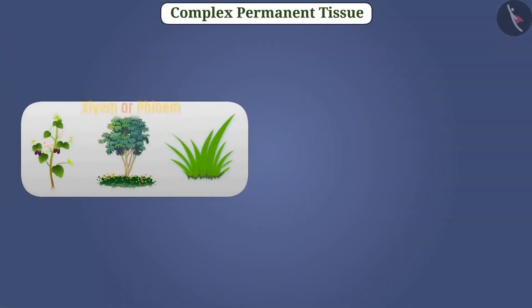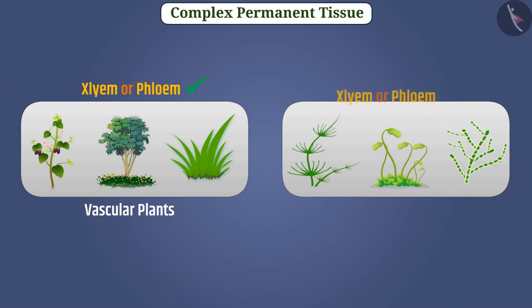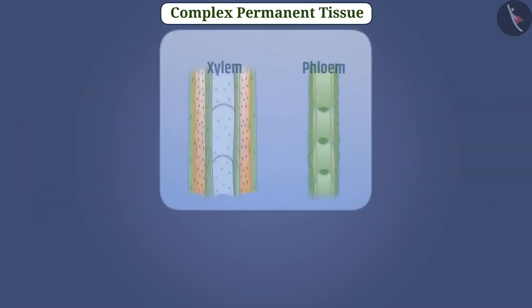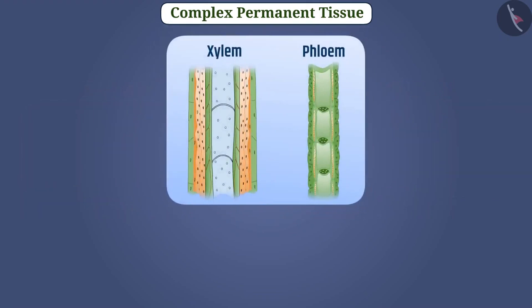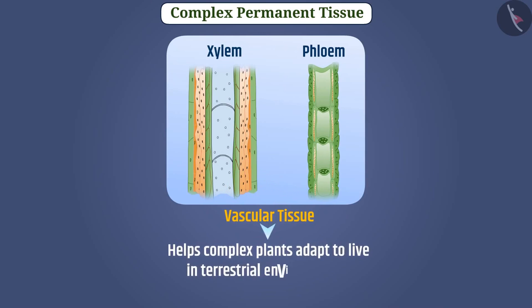Plants in which xylem and phloem are present are called vascular plants and plants in which xylem and phloem are not present are called non-vascular plants. Xylem and phloem, i.e. vascular tissue, helps complex plants to adapt and live in terrestrial environments.